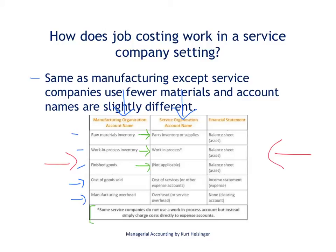Service organizations don't inventory product, so there is no tangible product being produced and therefore no finished goods inventory account. Instead of cost of goods sold — because we're not selling goods in a service organization — we'll typically use an account on the income statement called cost of services, or something along those lines. And instead of manufacturing overhead, we simply use overhead, because we're not manufacturing a tangible product.